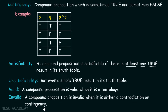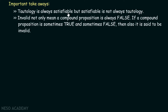Here are the takeaways for this lecture. Tautology is always satisfiable, but satisfiable is not always tautology. Invalid does not only mean a compound proposition is always false — if a compound proposition is sometimes true and sometimes false, it is also said to be invalid. An invalid compound proposition is not always a contradiction; it can be a contingency as well.